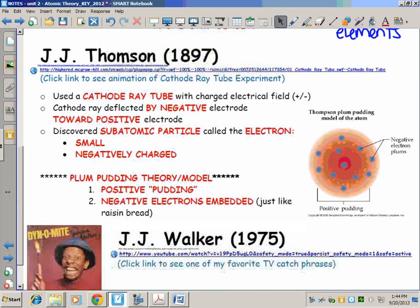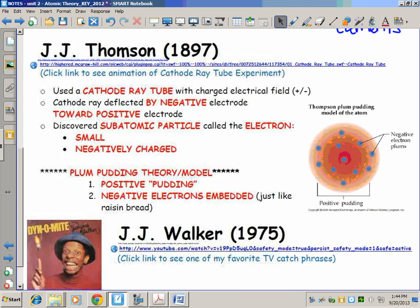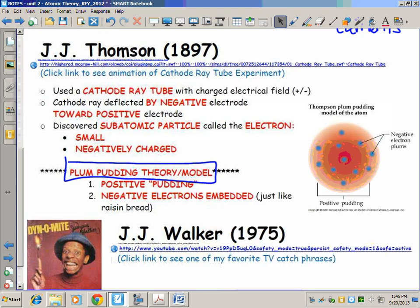Our next scientist who developed the next model that we focus on is J.J. Thomson in 1897, credited with developing what we call the plum pudding theory or model. And what you have to understand about the plum pudding is it's not the kind of pudding you think of like Jello gelatin pudding. Pudding for the English is like a muffin bread.